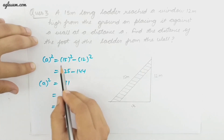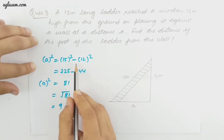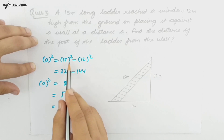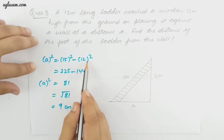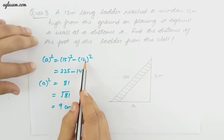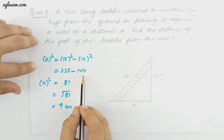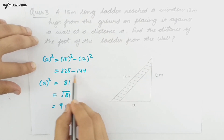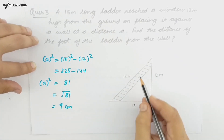A square equals 15 square minus 12 square. The square of 15 is 225 and the square of 12 is 144. We subtract because we need to find one of the shorter sides, not the hypotenuse.